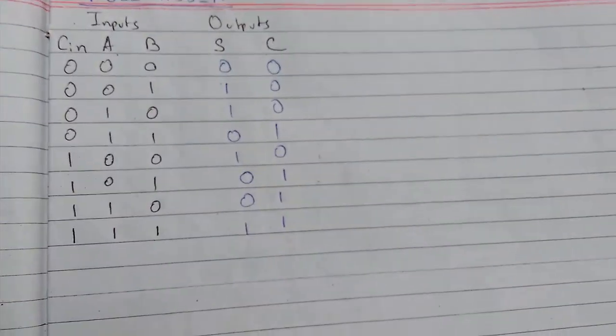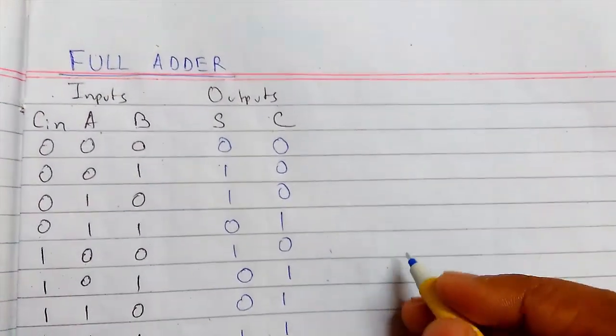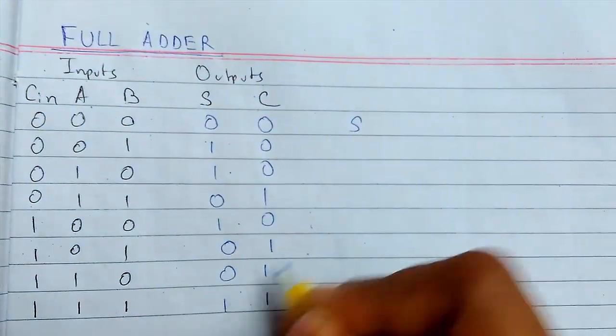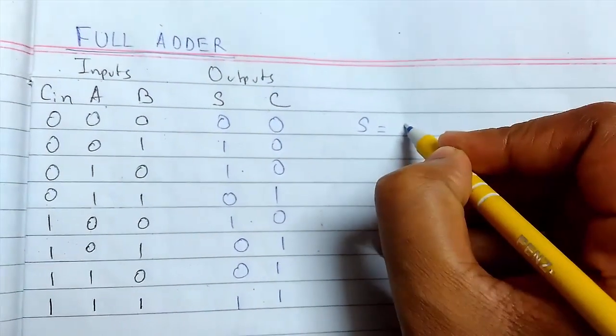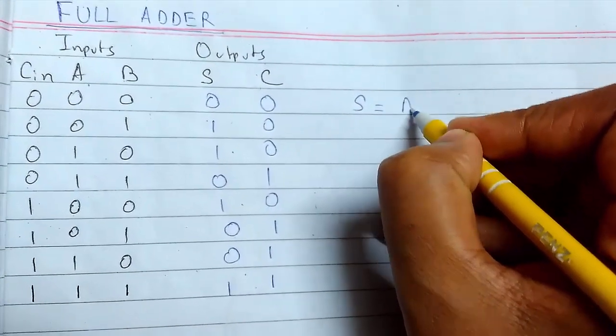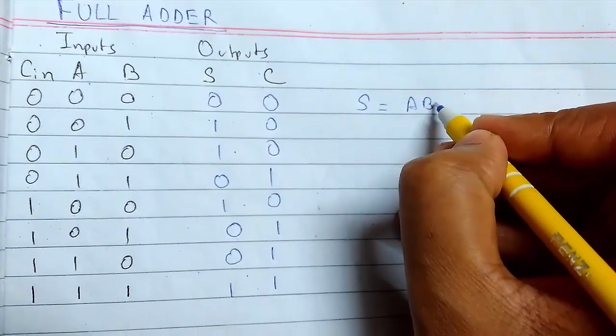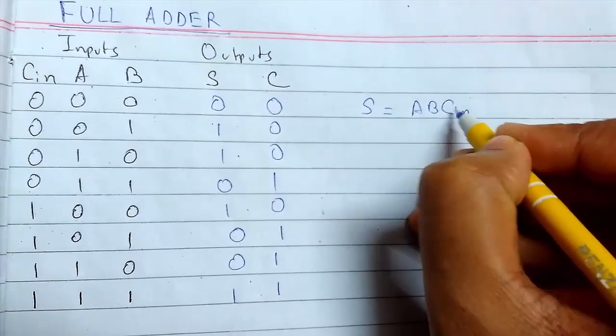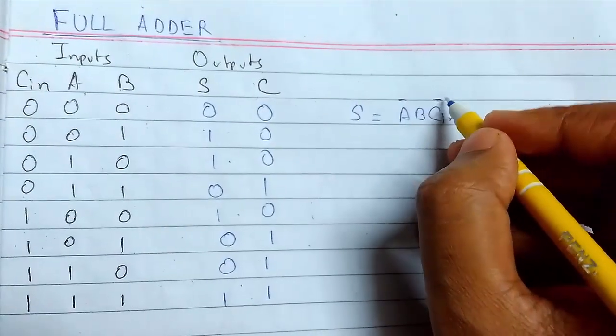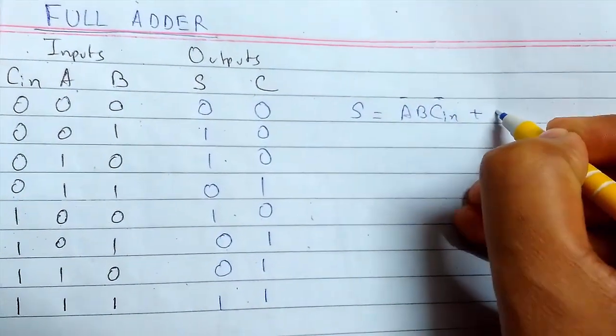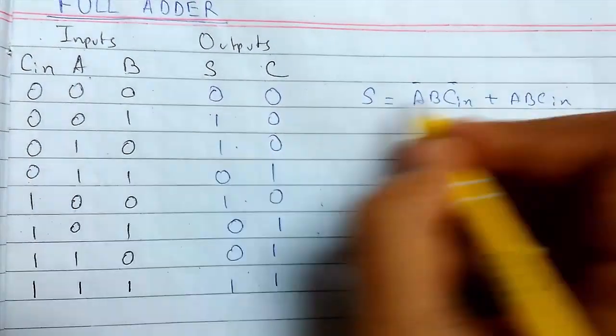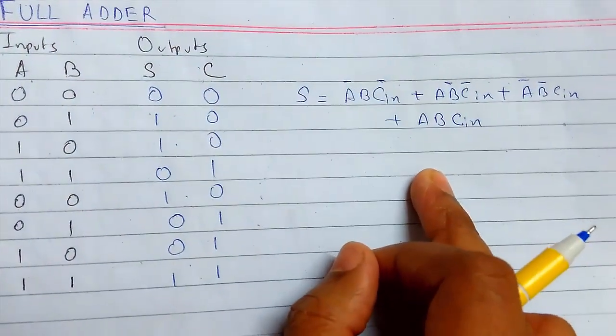Now we will see the function for the sum. The expressions will be these terms. The form will be A B C-in. This will be A and this will be A B C-in for this.